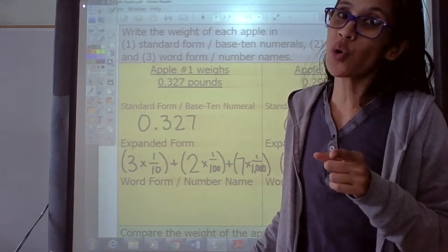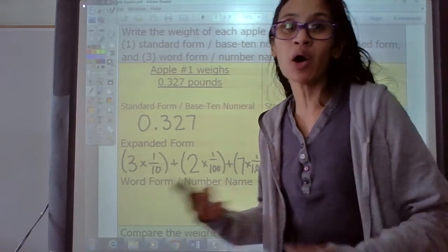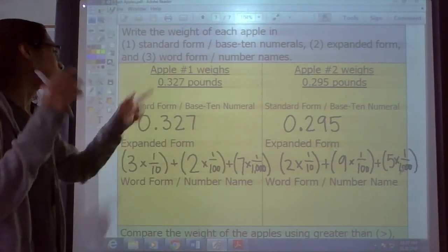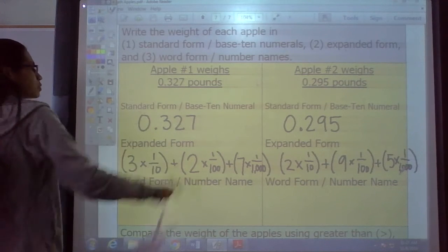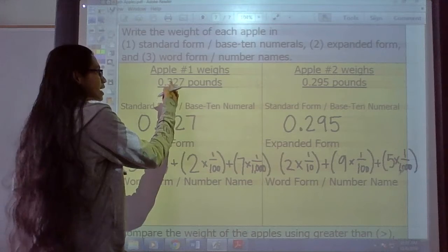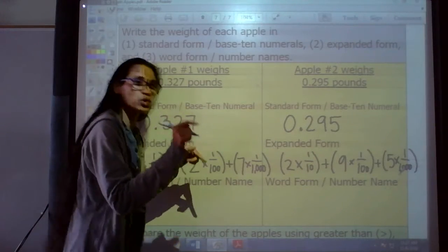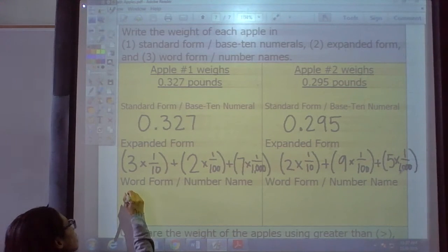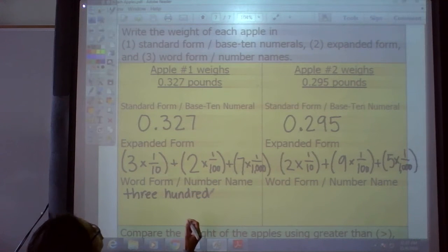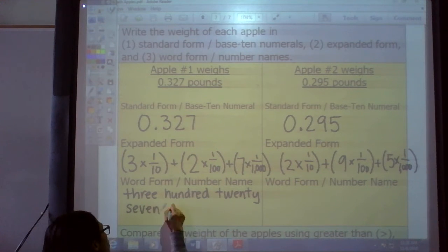The last thing we have to do is word form. Now, sometimes you might see, it doesn't say word form, but it says number names. So know both terms, both ways that they're going to ask you. They might say word form or number name. Well, you know how to do that. Let's write that in word form or its number name. And we've been saying it. Three hundred twenty-seven thousandths. Because remember, that's tenths, hundredths, thousandths. Remember that pattern. Three hundred, let me write it down.